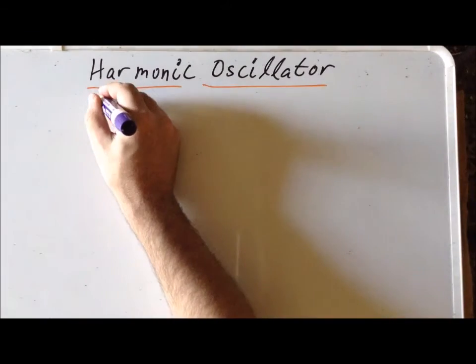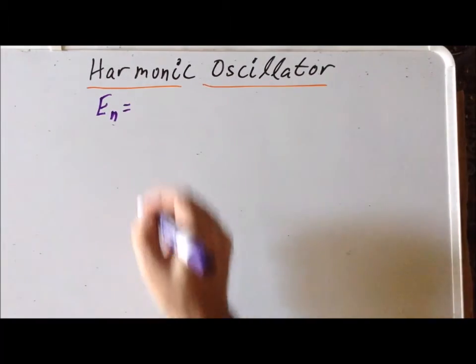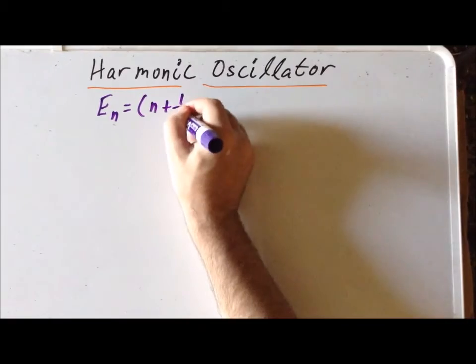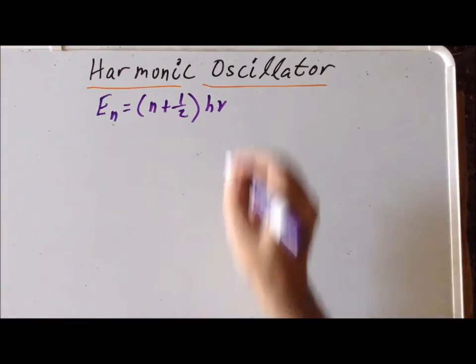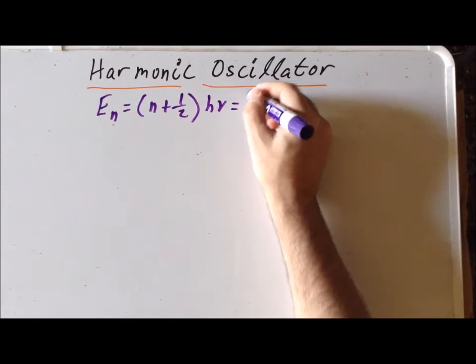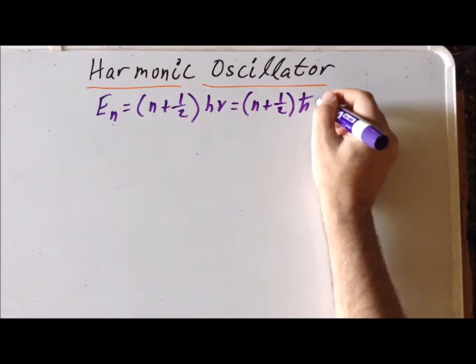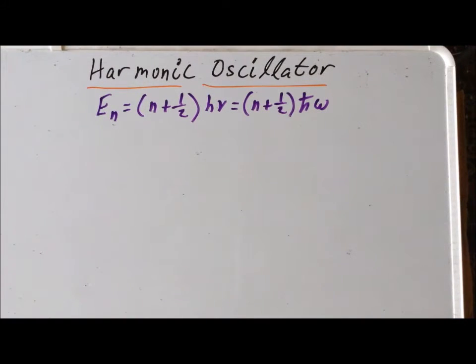Now recall that the energy of a particular level in the harmonic oscillator is equal to n plus one-half times h nu, or you can write it equivalently as n plus one-half times h-bar omega, where omega is the angular frequency.